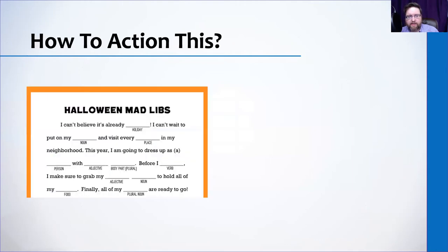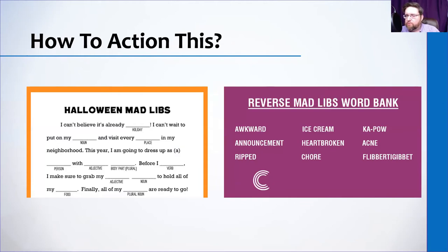How do we action this? There are two approaches. One is write something first and then edit to incorporate keywords. The other — what I call reverse Mad Libs — is to identify the five keywords you want to include and then write the product description around them. Or a combination of the two: write first, then figure out how to work the keywords in. Either way, you find the words that make the most sense and strategically build around them.